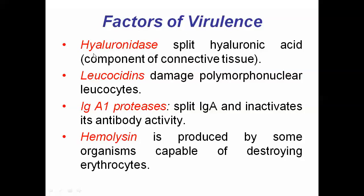Another virulence enzyme is hyaluronidase, which splits hyaluronic acid — a component of connective tissue. Once hyaluronic acid is broken down, bacteria can easily enter the tissue. A good analogy is fertilization: the sperm produces hyaluronidase enzyme that breaks down the hyaluronic acid surrounding the ovum, allowing the sperm to penetrate the egg and resulting in fertilization. Similarly, bacteria use hyaluronidase to penetrate host tissue.